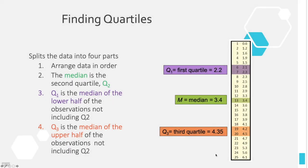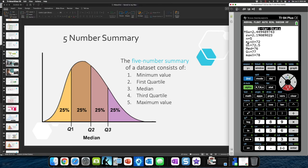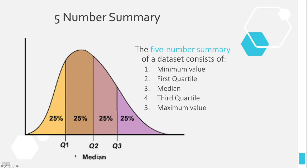The five-number summary consists of: the minimum data value, Q1, Q2 (the median), Q3, and the maximum data value. The calculator gives you all of these at the bottom of the 1-Var Stats output. This tells you the spread of your data set in terms of quartiles, separating the data into four quarters. It also sets us up nicely for the box plot and for identifying outliers.